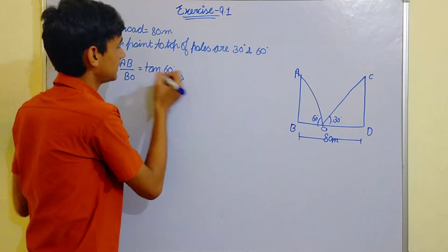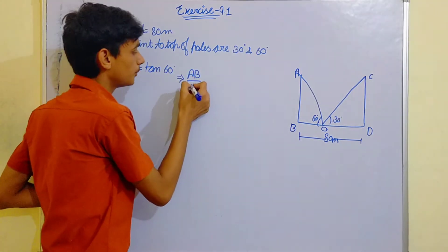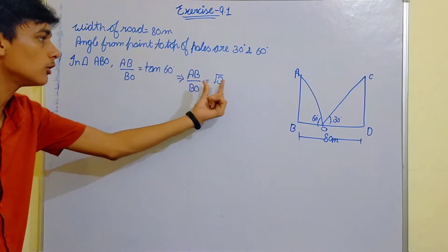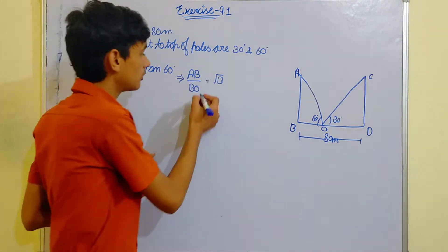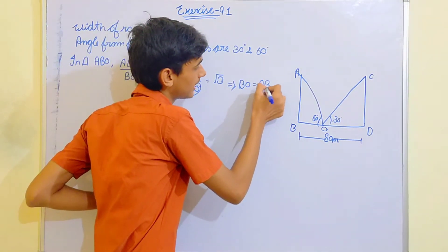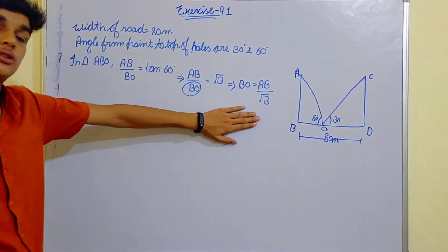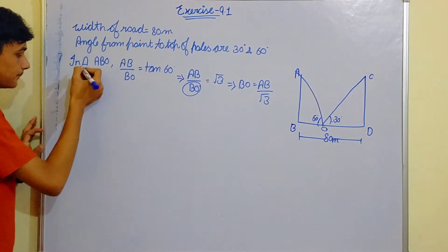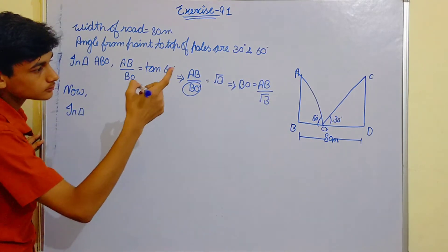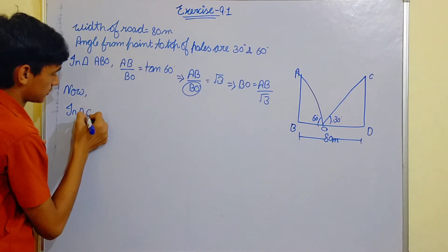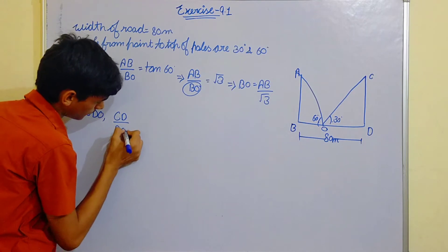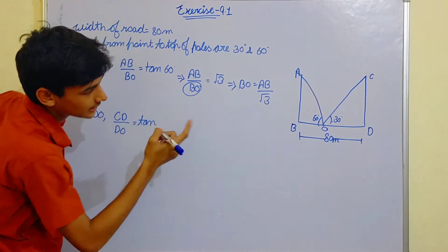Now in triangle FBO, tan 60 degree FB upon BO equals root 3, so BO is equal to FB by root 3. Now in triangle CDO,